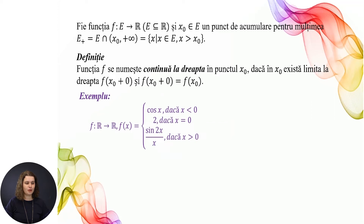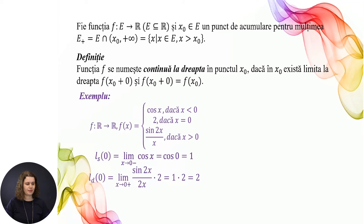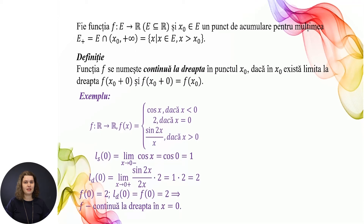Exemplu. F din R în R: f(x) = cos x dacă x < 0; f(x) = 2 dacă x = 0; f(x) = sin(2x)/x dacă x > 0. Calculăm limita la stânga în 0: limita când x → 0⁻ a lui cos x, înlocuim x = 0 și obținem cos 0 = 1. Limita la dreapta în 0: limita când x → 0⁺ a lui sin(2x)/x. Împărțim sin(2x)/x la 2 și înmulțim cu 2; sin(2x)/(2x) → 1 (limită remarcabilă) și obținem 1 × 2 = 2. F(0) = 2. Limita la dreapta în 0 este egală cu valoarea funcției în punctul 0, ambele egale cu 2. Deci rezultă că funcția este continuă la dreapta în x = 0.